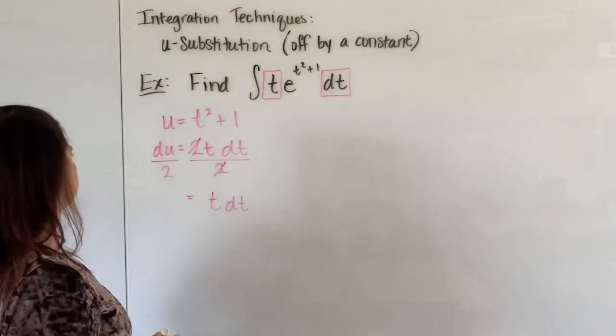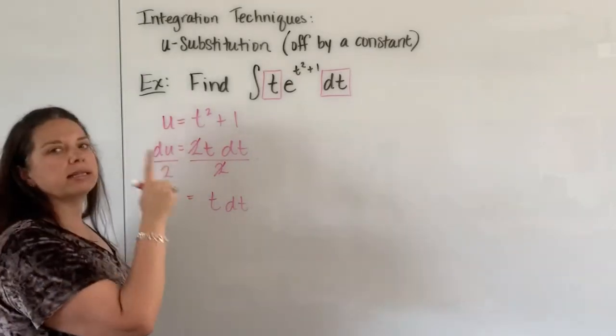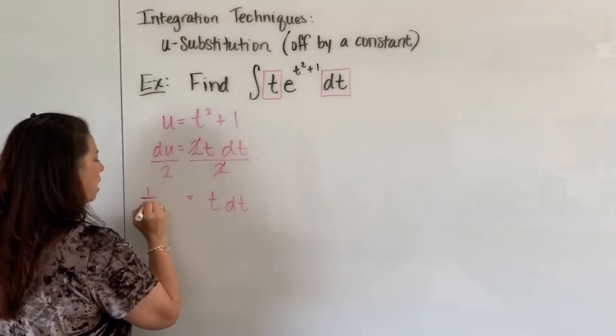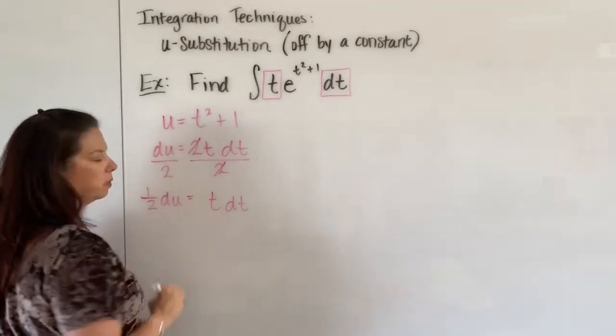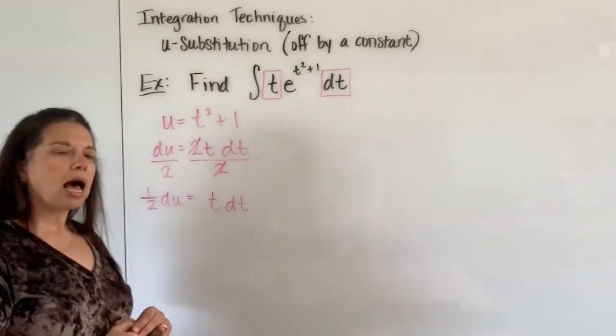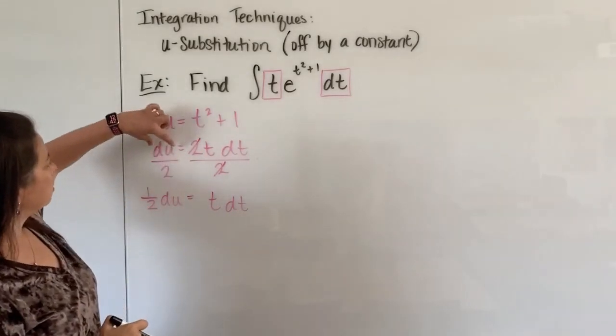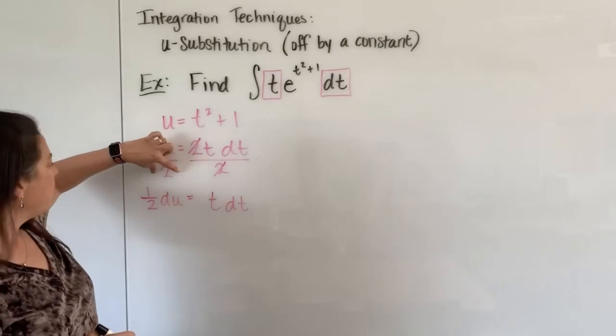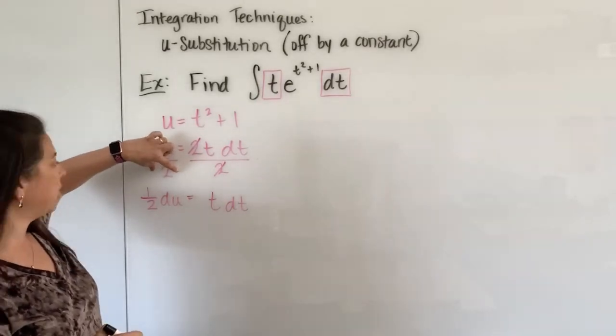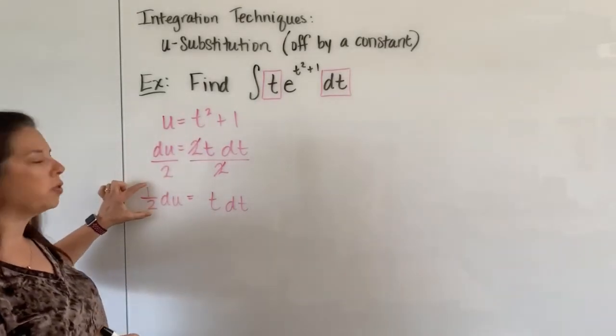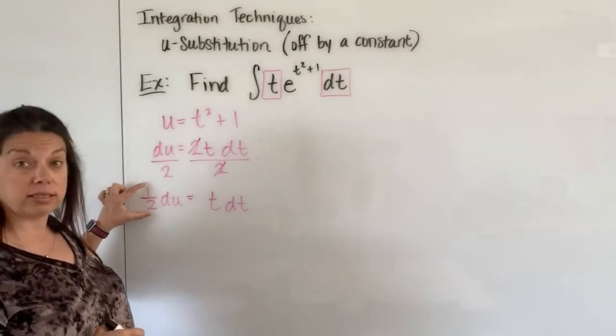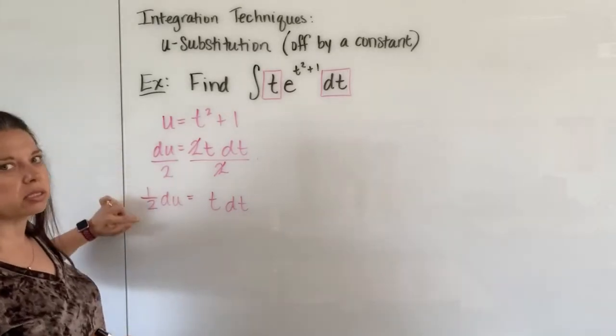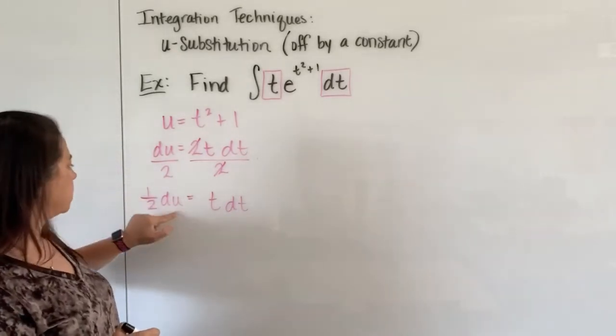On the left hand side let's go ahead and write this du over 2 in this way: 1 half times du. Okay I have a reason for that. I like when I have a fraction like this with some expression involving letters over some number, it's really often advantageous for us if we go ahead and just pull that quantity out front and you'll see why that would be really helpful in just a moment. And these two are equivalent. Du over 2 is the same thing as 1 half times a du.